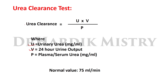If you have values of urinary urea and 24-hour urine output, you can calculate urea clearance. The formula is: urea clearance = U × V ÷ P, that is, urinary urea × 24-hour urine output ÷ plasma or serum urea. The normal value of urea clearance is on average 75 mL per minute.